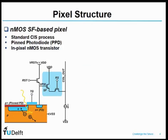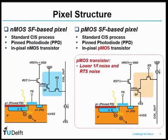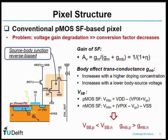This figure shows the pixel structure in the CMOS image sensor. It uses the standard CIS process, and the photon sensing element is the pin photodiode. The readout circuits at the pixel level are implemented with MOS transistors. In order to reduce the noise level of the pixel, there is an alternative way to implement the readout circuit: we use the PMOS transistor as the source follower in each pixel, because the PMOS transistor shows lower flicker noise and random telegraph signal noise than NMOS. However, compared with the NMOS source follower-based pixel, the conventional PMOS source follower-based pixel has a problem of voltage gain degradation, which causes the conversion factor to decrease.